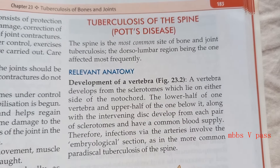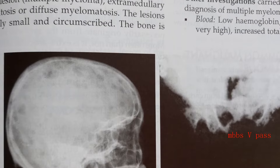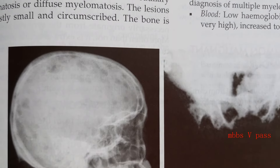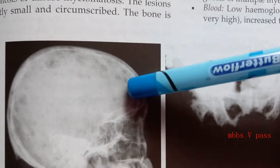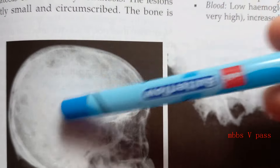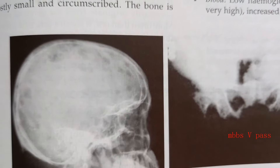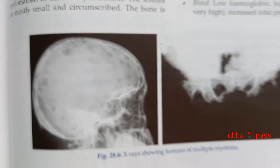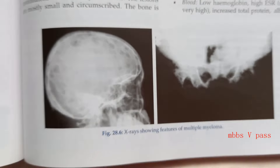We are looking at this book, Essential Orthopedics — just looking at some images here and there. Look at this skull: punched out lesions. Which condition is this? Multiple myeloma.